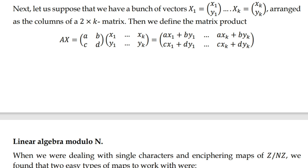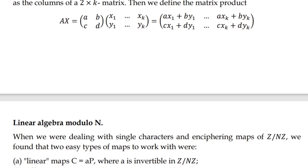When dealing with single characters and cipher maps of Z over nZ, we have two types of maps. First, linear maps: c is congruent to ap mod n, where a is invertible in Z over nZ. Second, affine maps: c is congruent to ap plus b mod n, where a is invertible in Z over nZ.